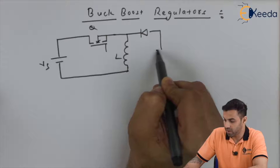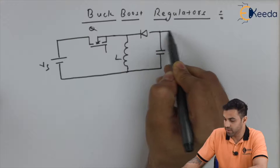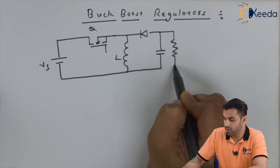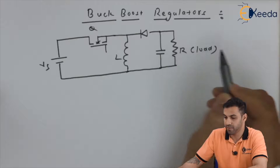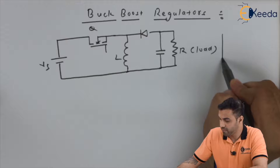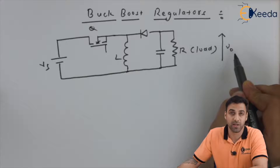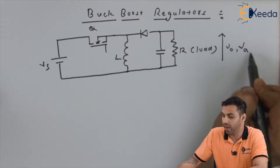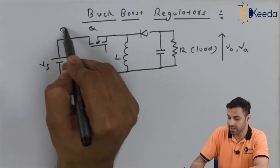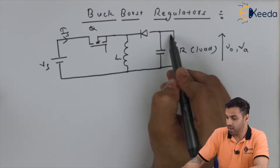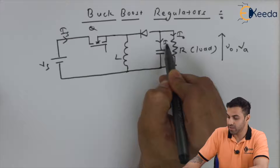Let's say this is the capacitor and this is the resistive load. Let V_naught be the instantaneous output voltage and V_a be the average output voltage. I_s is the input current, I_naught is the output current, I_c is the current through the capacitor.